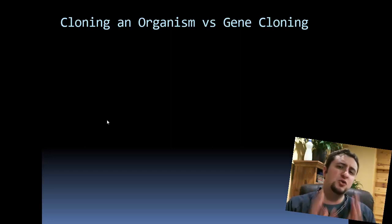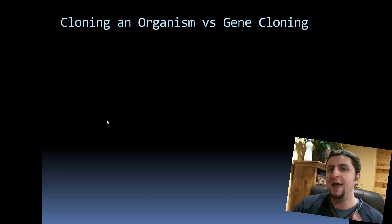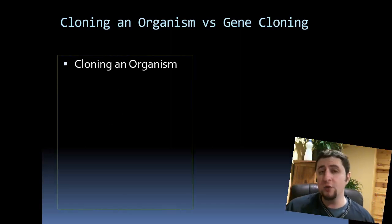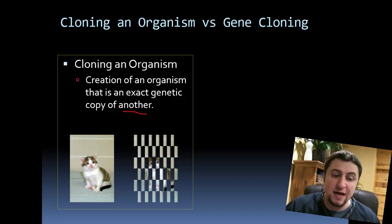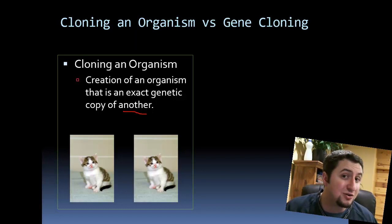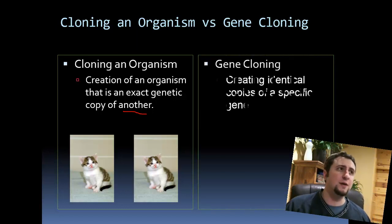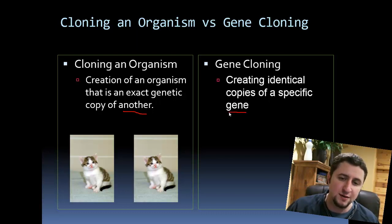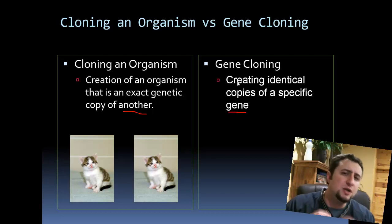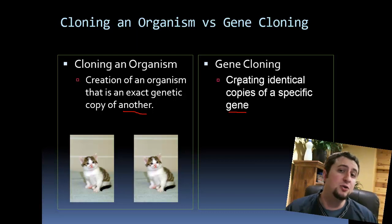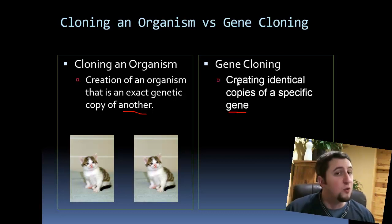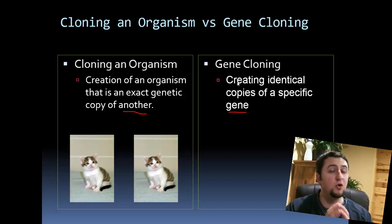The first thing to understand is that there's a difference between cloning a whole organism and gene cloning. When we clone an organism, we create an organism that is an exact copy of another — like taking a cat and copying it so it's genetically identical to the original. With gene cloning, we create identical copies of a specific gene. A gene is a segment of DNA that codes for a specific physical trait, and in your body you have about 21,000 different genes. Gene cloning is a lot easier to do than whole organism cloning.